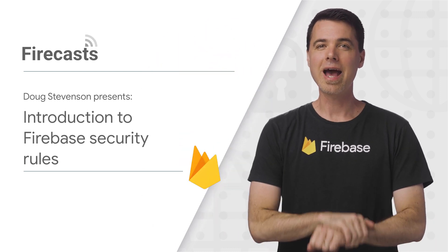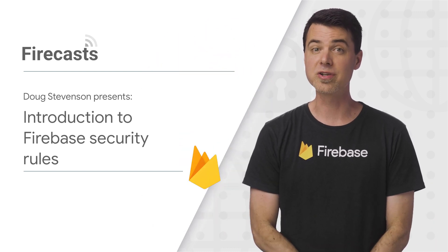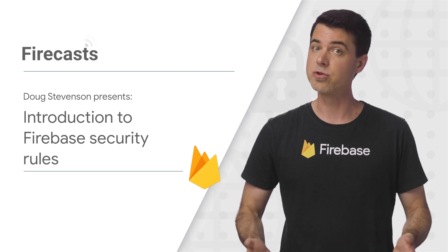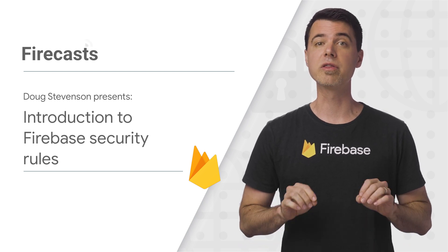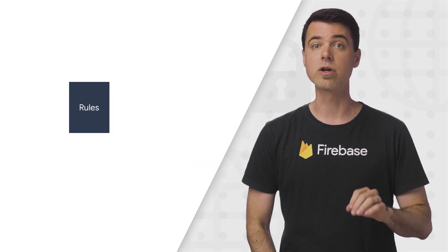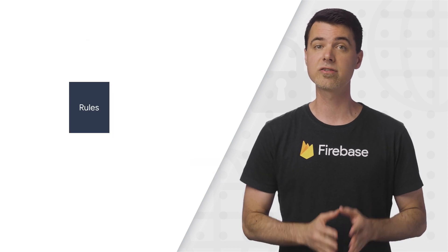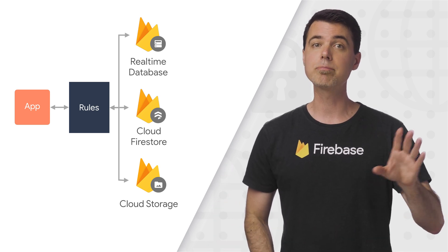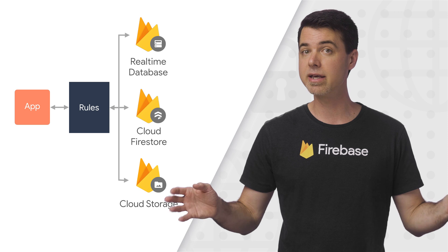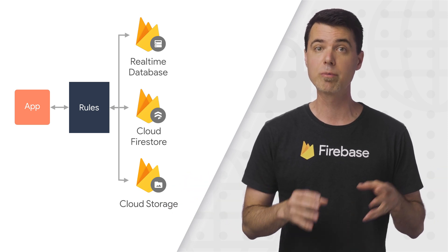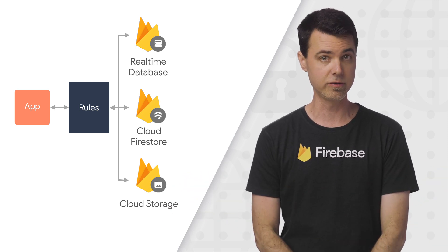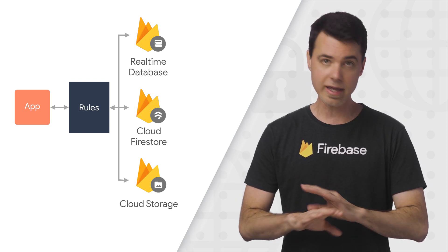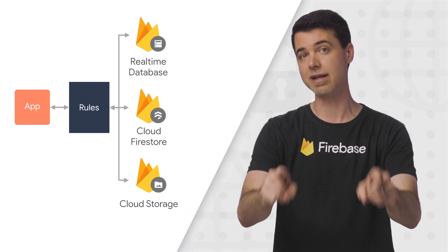Hey, Firebase developers. How do you make sure that your users can read and write only the data in your project that they're allowed? You probably already know that you can do this with Firebase security rules. You can write security rules to protect the data stored in real-time database, Cloud Firestore, and Cloud Storage. These rules sit between your client app and the data, making sure that each of the reads and writes performed by the client SDK are allowed for the end user. If your client app directly reads and writes data using any of these three products, you definitely need to think about security.